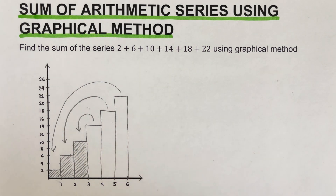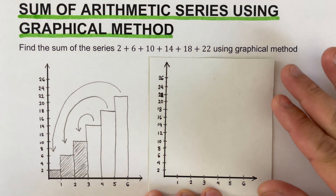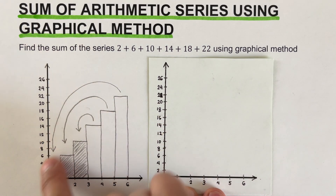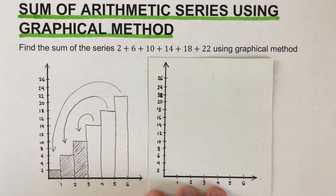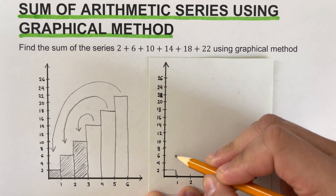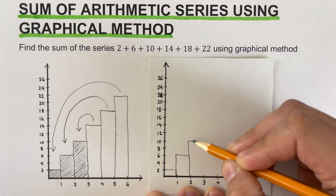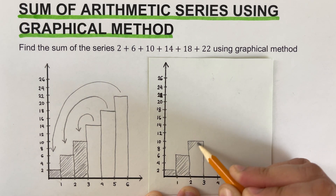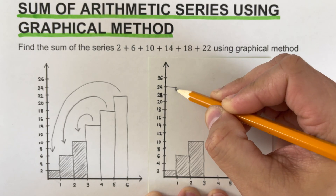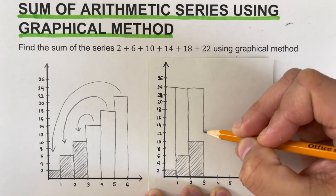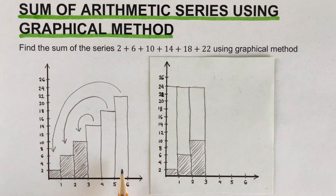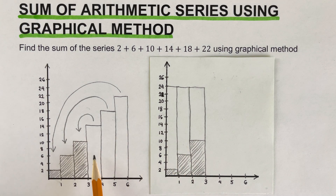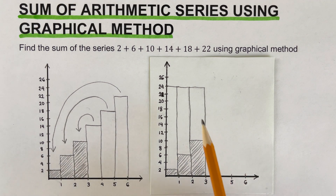Let's sketch this stacked graph. The last rectangle is placed on top of the first, the second-to-last on top of the second, and the middle one on top of the third. This is how the graph looks after stacking up the rectangles. Now we're ready to move on to the third step.